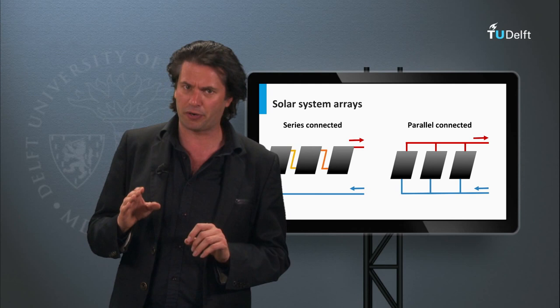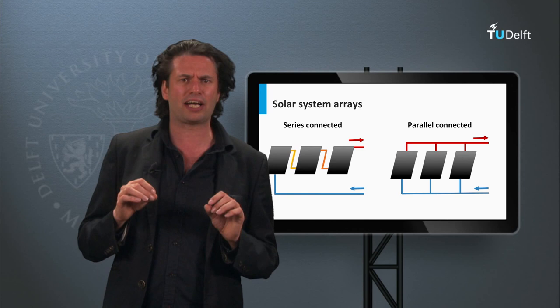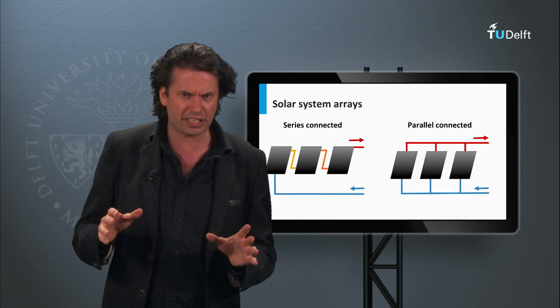Connecting collectors in parallel means that all collectors have as input the same temperature, whereas if the series connection is used, the outlet temperature from one collector is the input of the next.